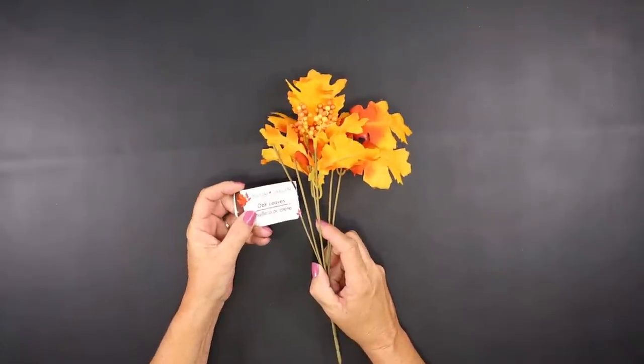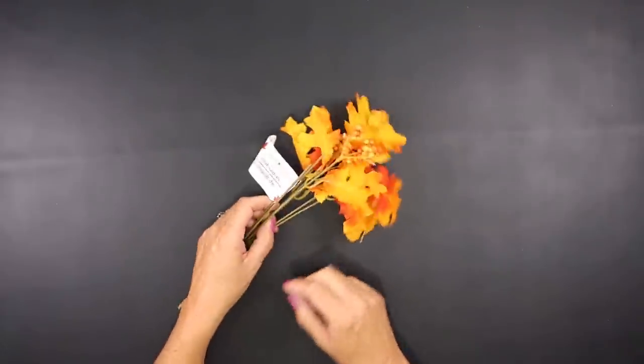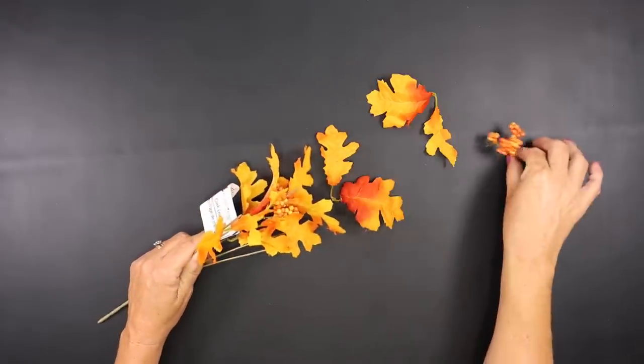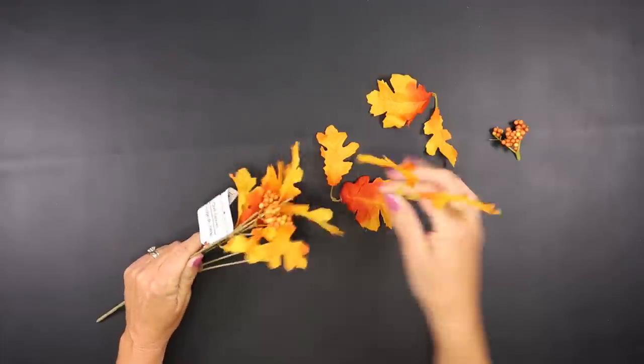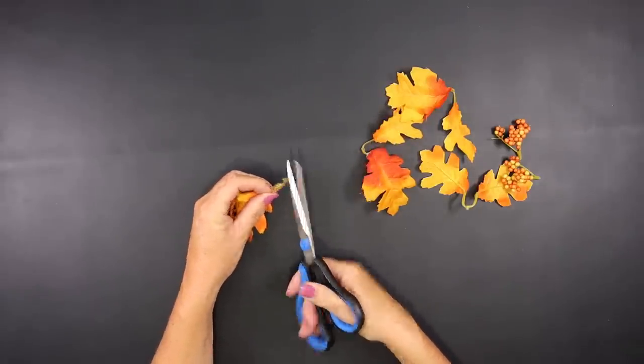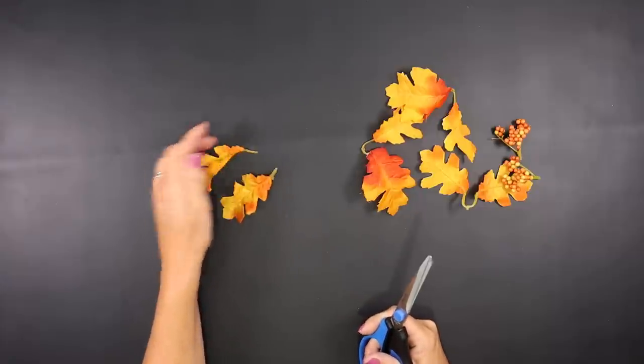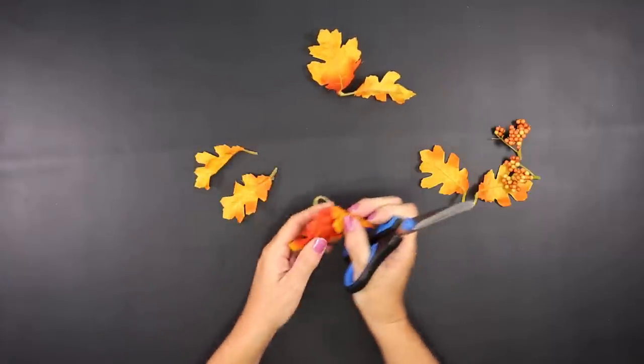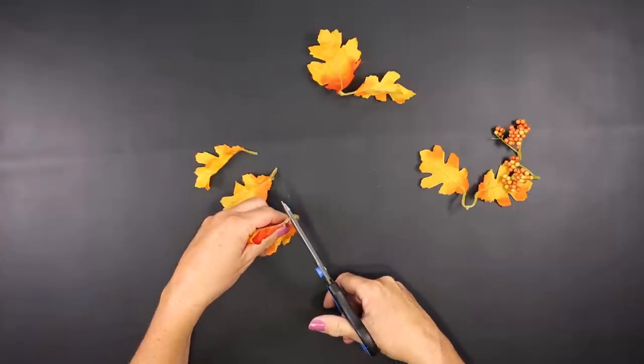For this project, we're using one of Dollar Tree's oak leaf bundles. Remove the leaves as well as the berries from the stems. They'll come in a set of two, so you'll want to clip that center section off and have individual leaves. You're going to need a total of 10 leaves for this project.